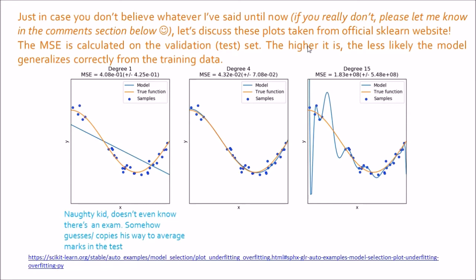To give a small example: underfitting is like the naughty kid who doesn't even know there is an exam. But on exam day, he somehow guesses or copies his way to average marks. He has not learned anything — he just comes into the exam without any knowledge and tries to guess, getting a decent but not the best result.